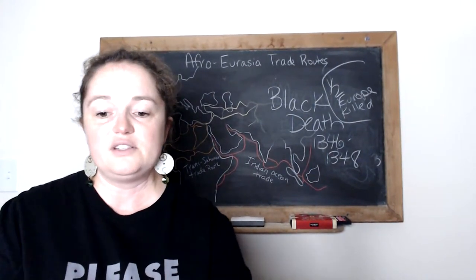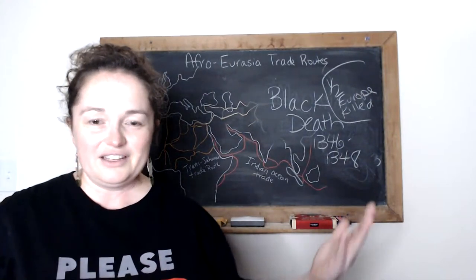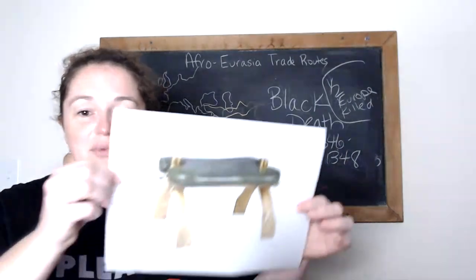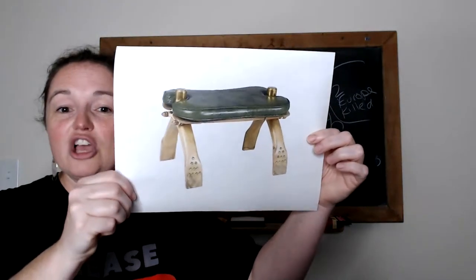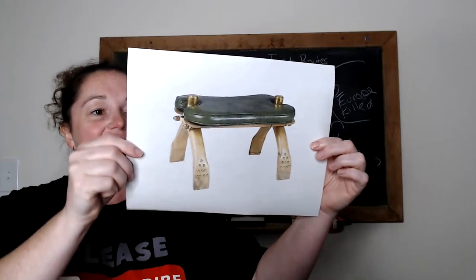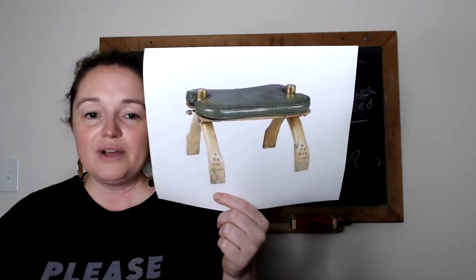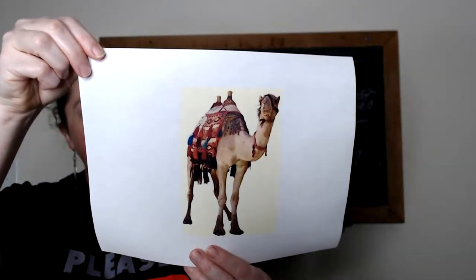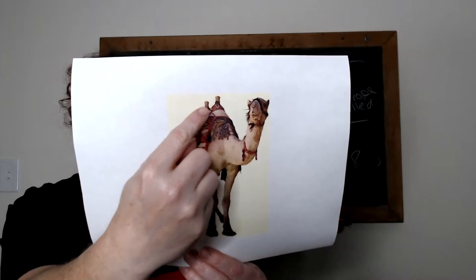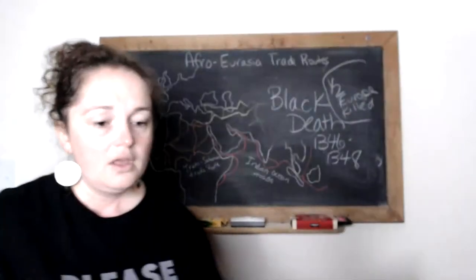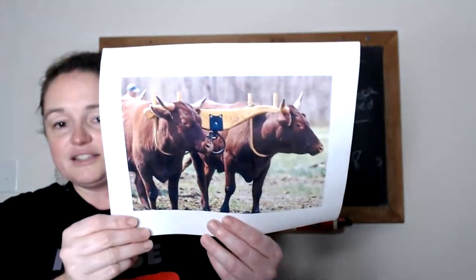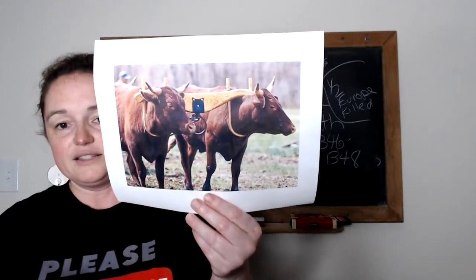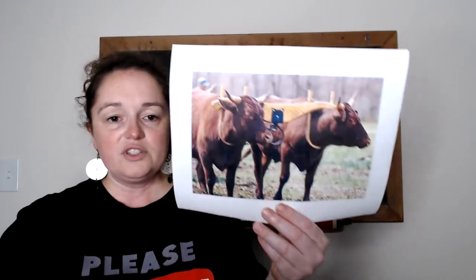Here's a camel saddle — it makes it possible to ride camels for longer distances. On the camel they usually cover the saddle part with blankets. Another innovation is the yoke, which goes between oxen so they can pull wagons more easily. The yoke is spelled Y-O-K-E.